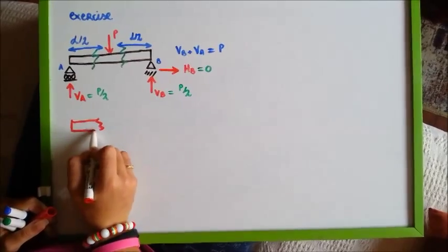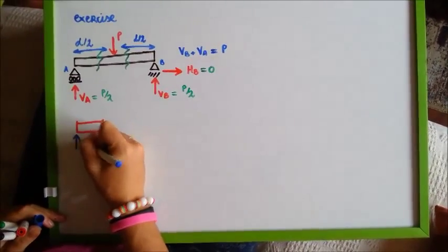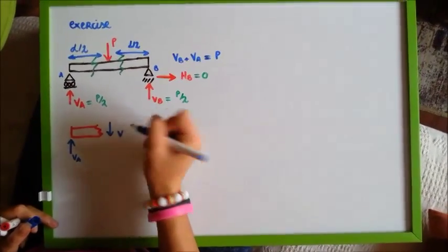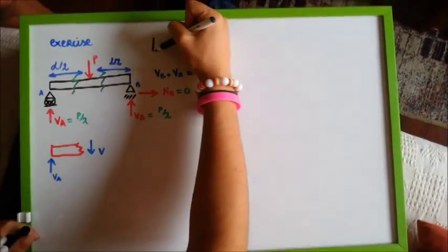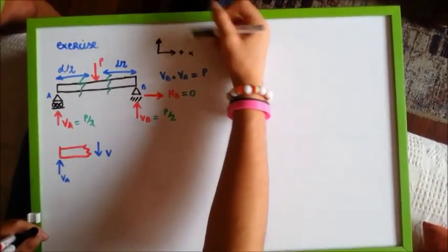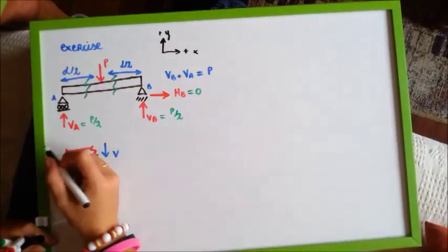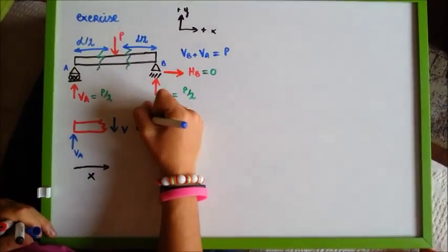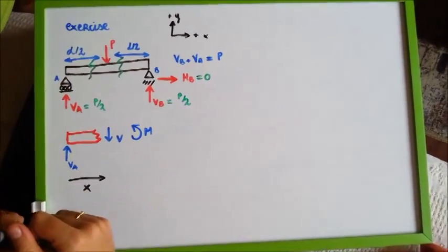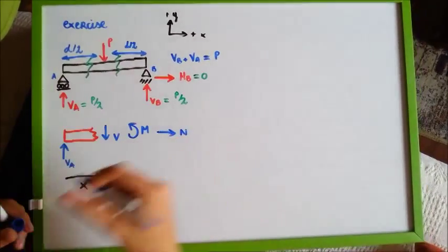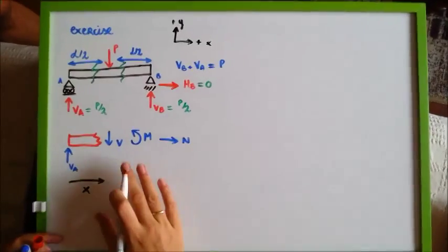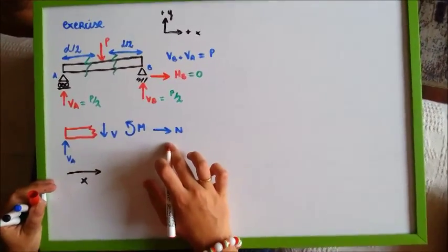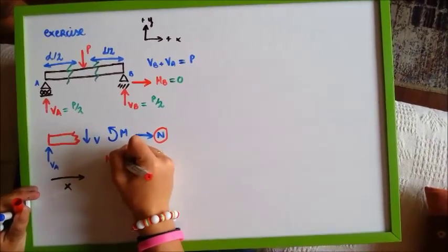Here we have VA and here we have VB — they're sharing stress. Taking this reference system, the positive x direction and the positive y direction, this distance is x. This is the bending moment M, and we also have the normal N. Applying the equilibrium equation, as there are no horizontal forces, N equals 0.